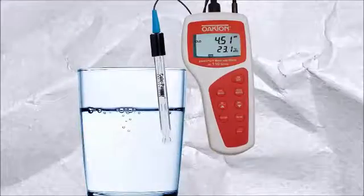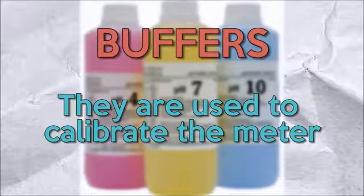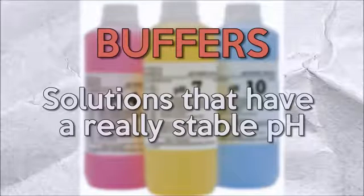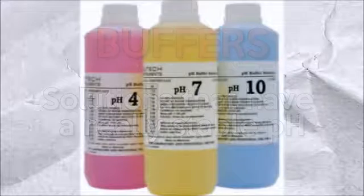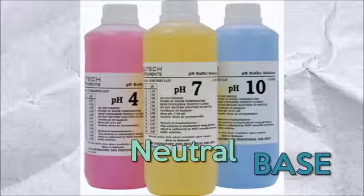But, before measuring the pH of a solution, you need to measure the buffers, which are used to calibrate the meter. They are solutions that have a really stable pH, and are separated into three different pH values, 4, 7, and 10, base, neutral, and an acid.